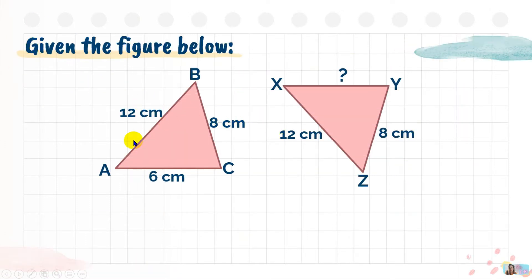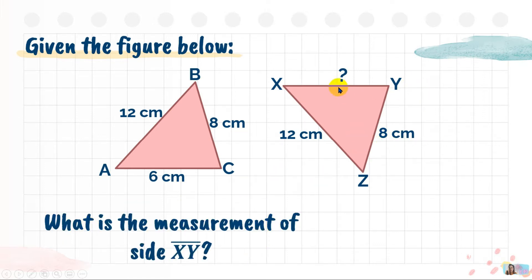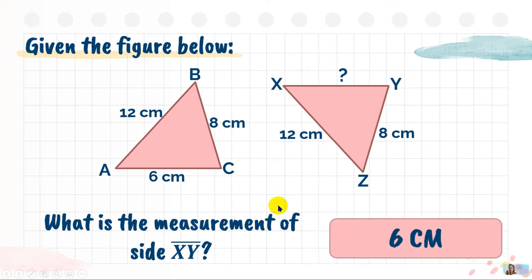For number one, we have triangle ABC and triangle XZY. Triangle ABC is congruent to triangle XZY. The question is: what is the measurement of side XY? We find its corresponding congruent part. Side AB corresponds to XZ, side BC corresponds to ZY, and side XY corresponds to side AC. Therefore, the measurement of side XY is 6 cm.